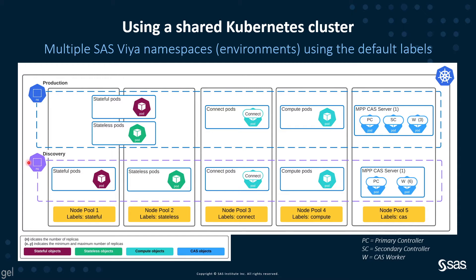One of the things to note is that the environments don't have to be the same. In our production environment, the stateful and stateless pods are sharing the node pool for stateful and stateless nodes — as discussed in video two. In our discovery environment, the stateful pods are only running on node pool one, and our stateless pods are only running on node pool two. We can also see that we can have different types of CAS servers per environment. The production environment has an MPP CAS server with a primary controller, secondary controller, and three workers.